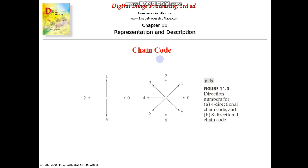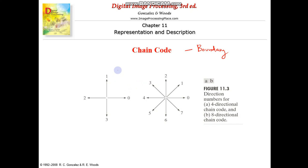Moving on to the first method: chain code. Chain code is used to represent a boundary using a connected sequence of straight line segments. Each direction has a number. This representation based on line segments depends on four-directional or eight-directional connectivity — we already know about four connectivity and eight connectivity — and choosing this depends on the connectivity of the segments.